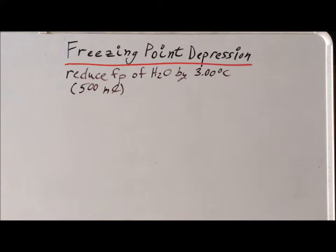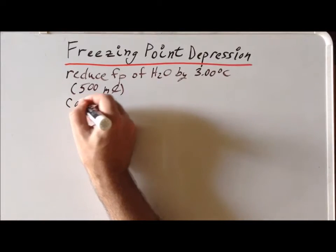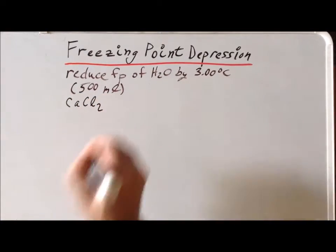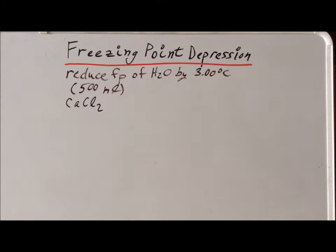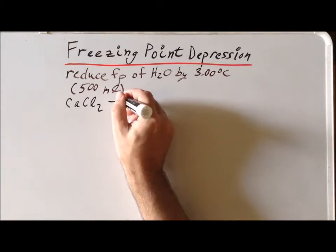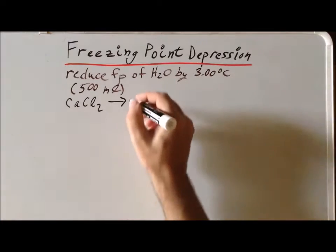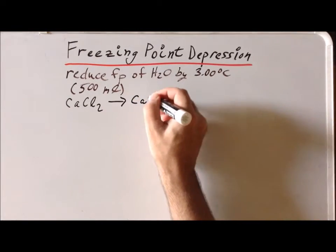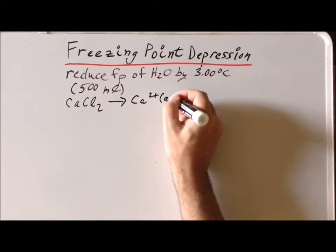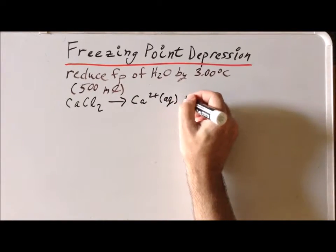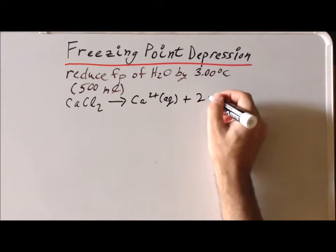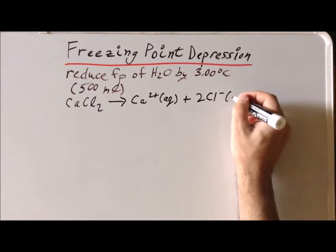The way that we're going to do that for this particular example is to add a certain mass of the compound calcium chloride. So we recall that calcium chloride is a strong electrolyte. If we dissolve it into water, it's going to break up into one calcium two plus ion plus two chloride ions.